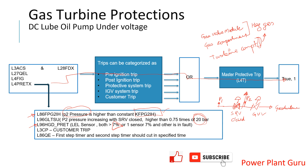A pre-ignition trip is triggered if both sensors show more than 7%, confirming a definite leakage. There is also another case: if one sensor is showing more than 7% and the other sensor is in fault, the system relies on the healthy sensor and understands that the faulty one may also be in a risky zone. To summarize, if both sensors exceed 7%, or if one sensor exceeds 7% and the other is in fault, this indicates hazardous gas leakage in the turbine compartment or gas valve module, triggering L4PRETX and causing a machine trip.